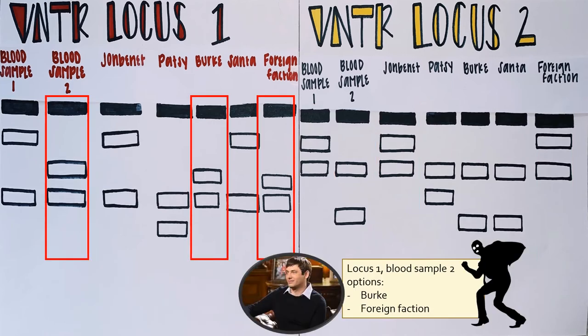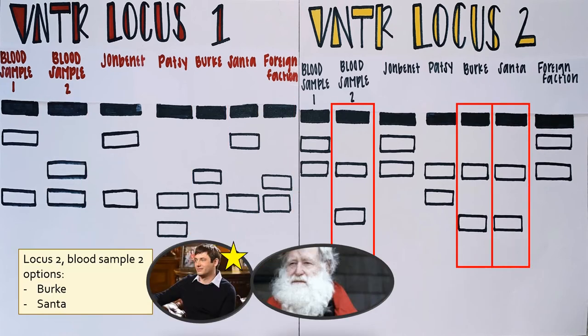Now that we know blood sample 1 belongs to our victim, we can use blood sample 2 to determine our killer. In loci 1, we can see that the banding patterns of blood sample 2 match the banding patterns of both Berkey and the foreign faction. In order to narrow down our suspect to one individual, we will look at our second loci. When we examine our second loci, we can see that the DNA of blood sample 2 matched the DNA of Berkey and Santa. Since the DNA of blood sample 2 did not match the DNA of Santa in loci 1, we can confirm his innocence. Because the DNA of blood sample 2 matched the DNA of Berkey in both loci, we can determine that this blood belonged to him and he can be presumed guilty of the murder.